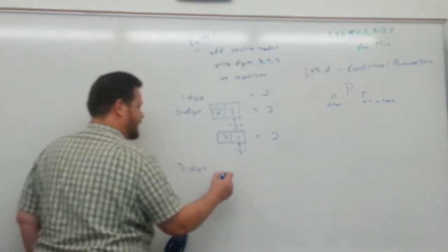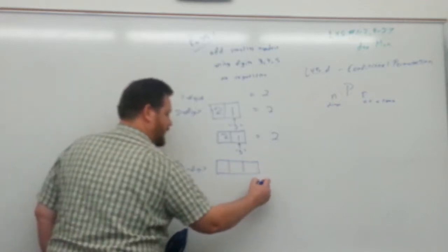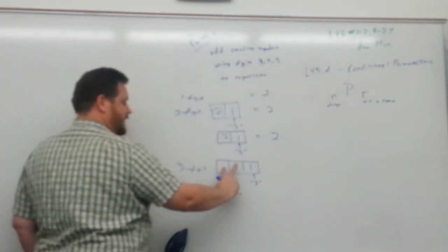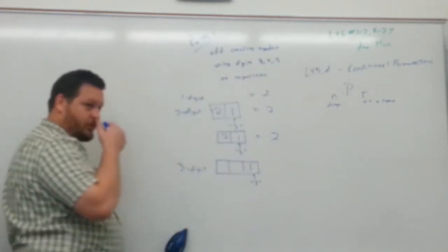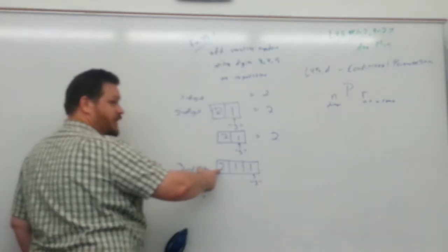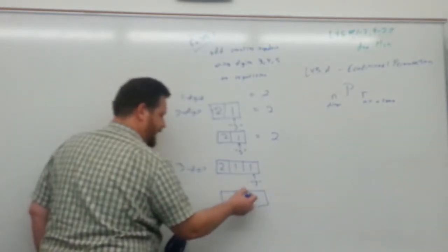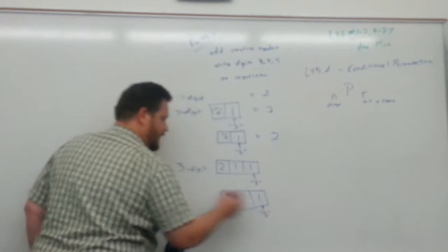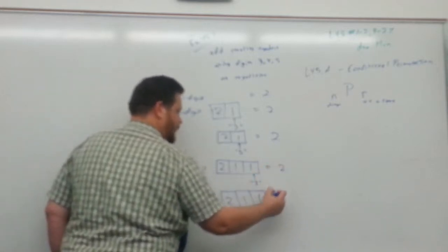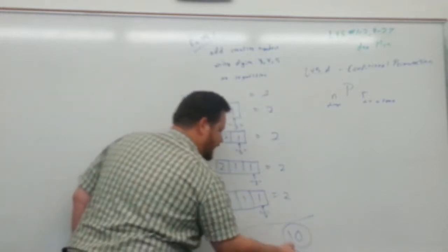We also have three-digit counting numbers to consider. For it to be odd, the ones place has to be odd. If we put a 3 there — one possibility — the remaining digits 4 and 5 can go in either of the other two spots, giving two possibilities. The same applies if we put a 5 in the ones place: one option there, two arrangements for the remaining digits. So this gives us two plus two options for three-digit numbers. Adding them all up: 2 plus 2 plus 2 plus 2 plus 2 equals a total of ten possibilities.